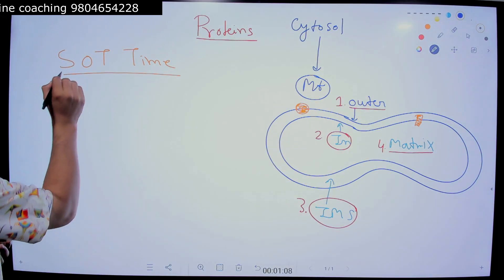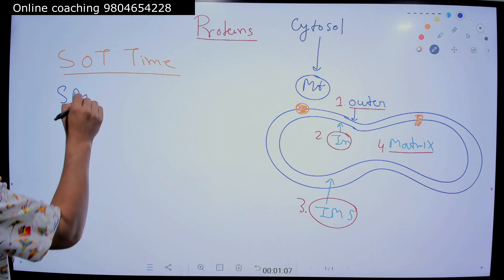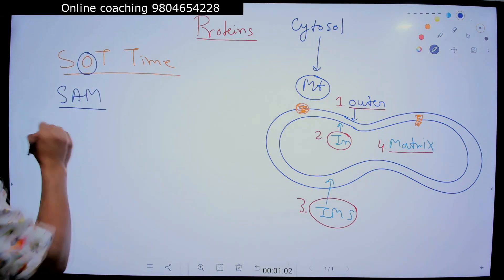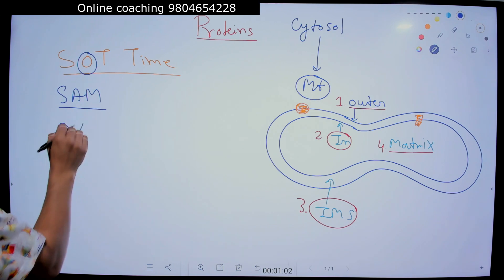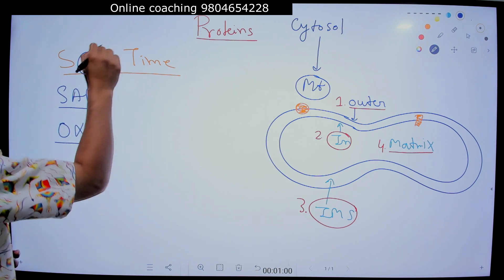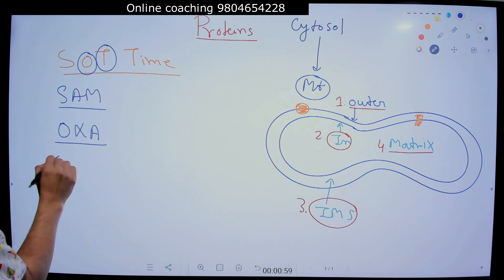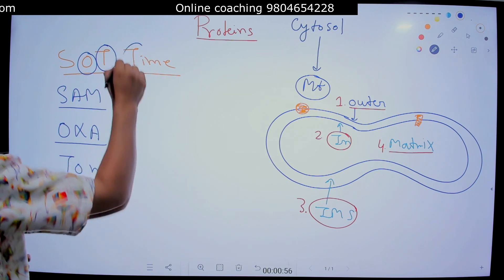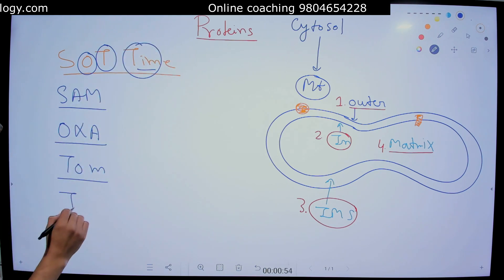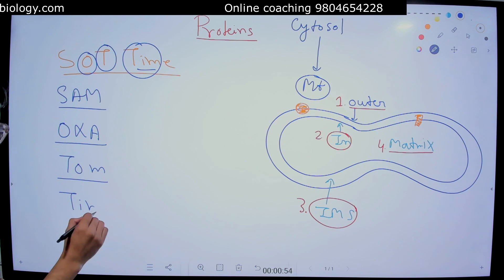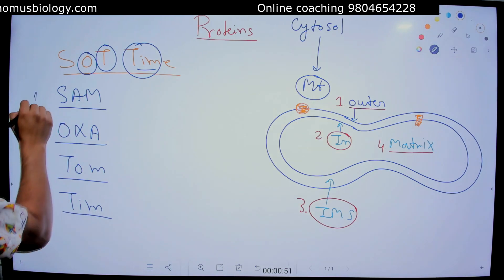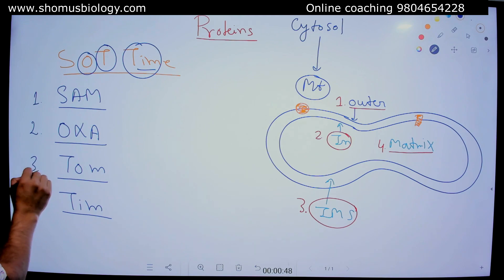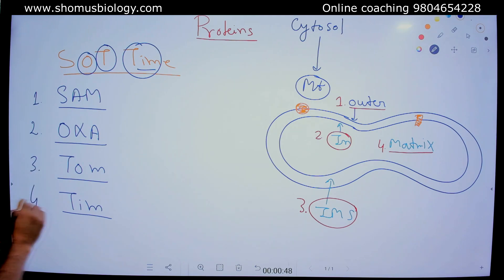Starting with S: S stands for the SAM complex. Then O stands for the OXA complex. Then T stands for the TOM complex. And then we have TIM — the TIM complex. These are the four complexes: SAM, OXA, TOM, and TIM.